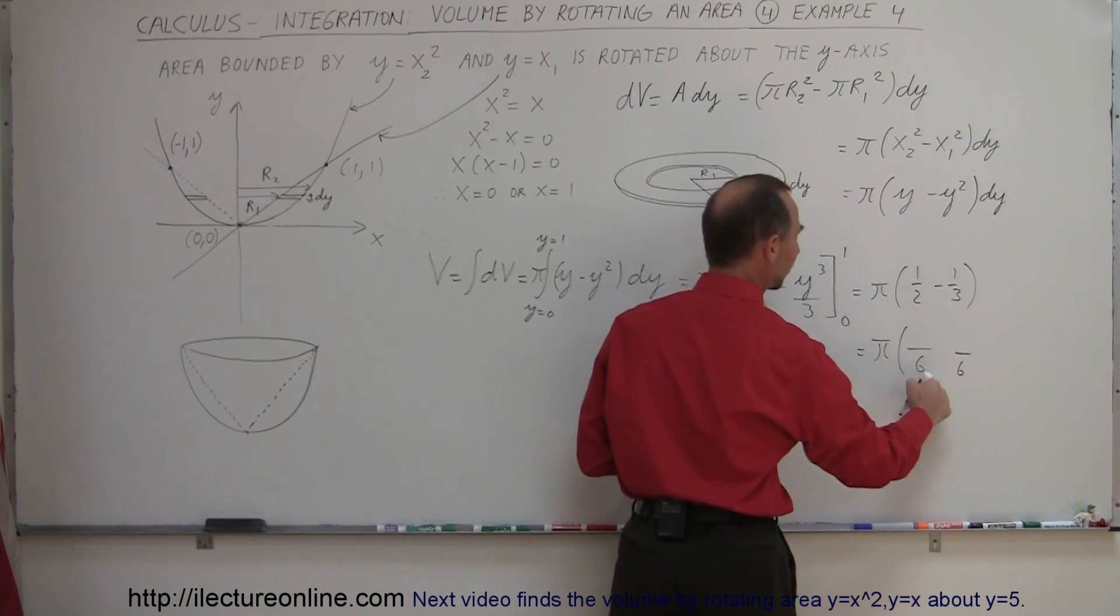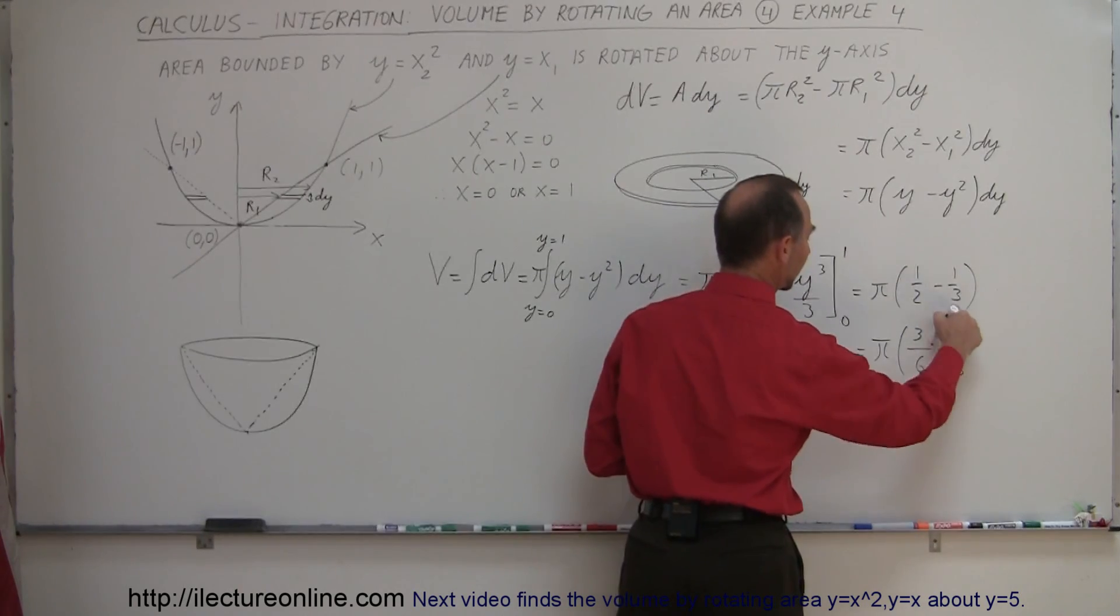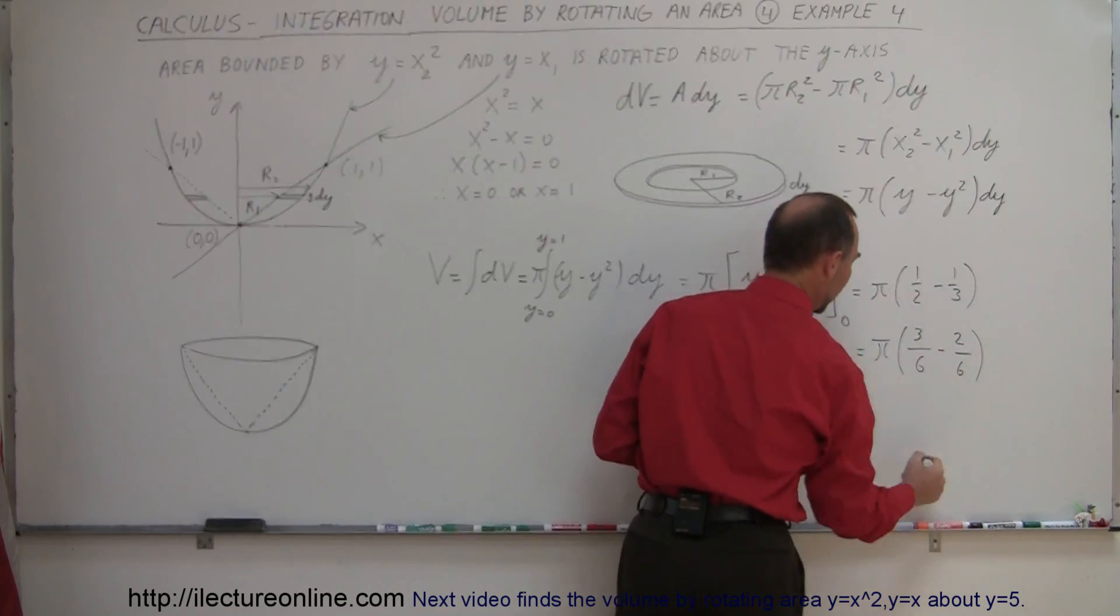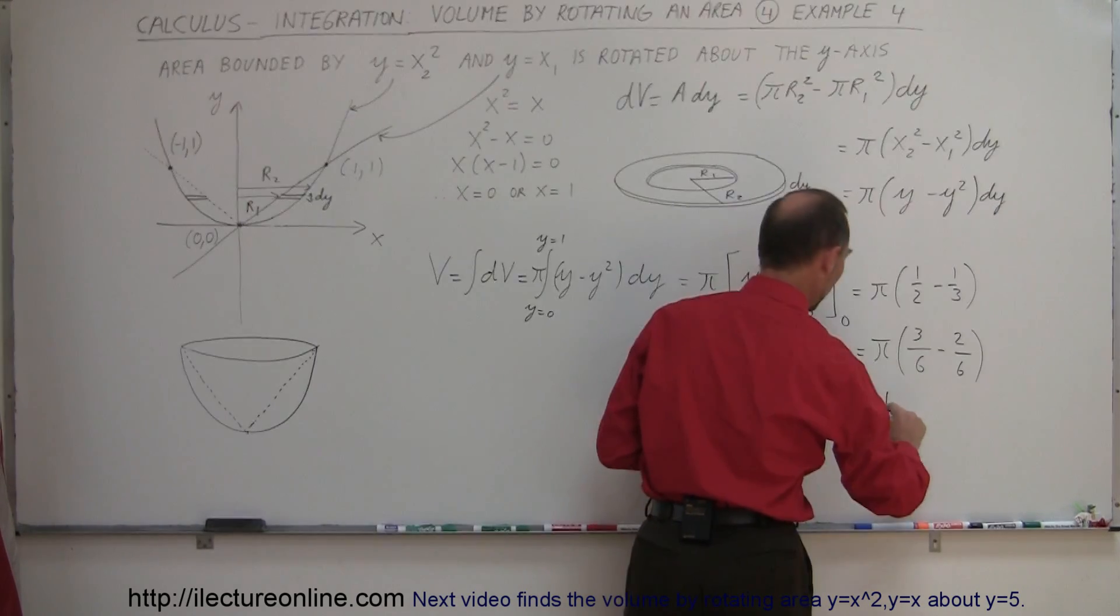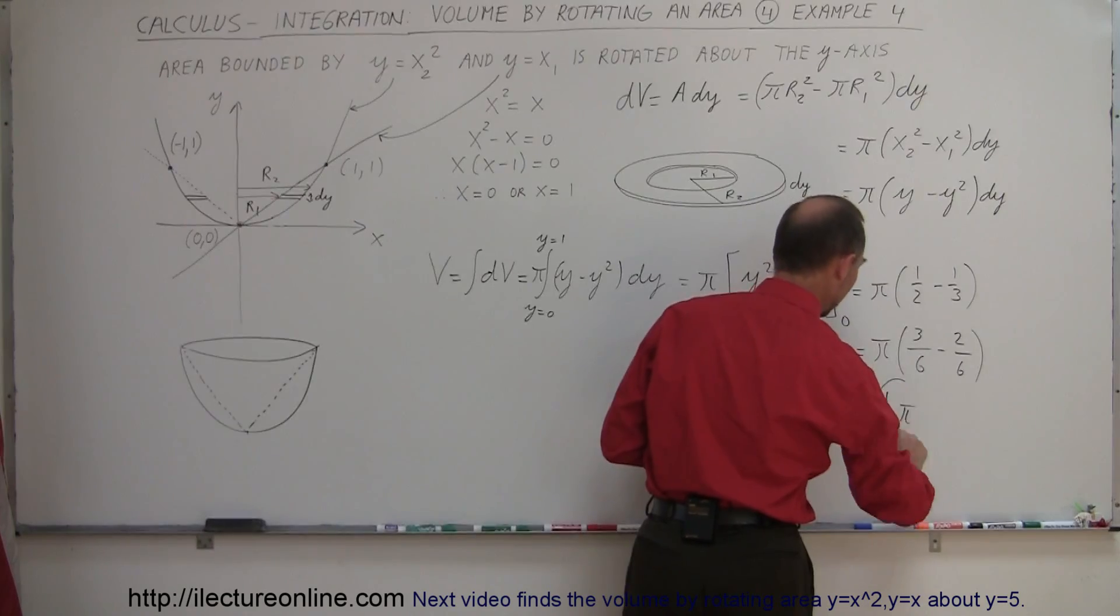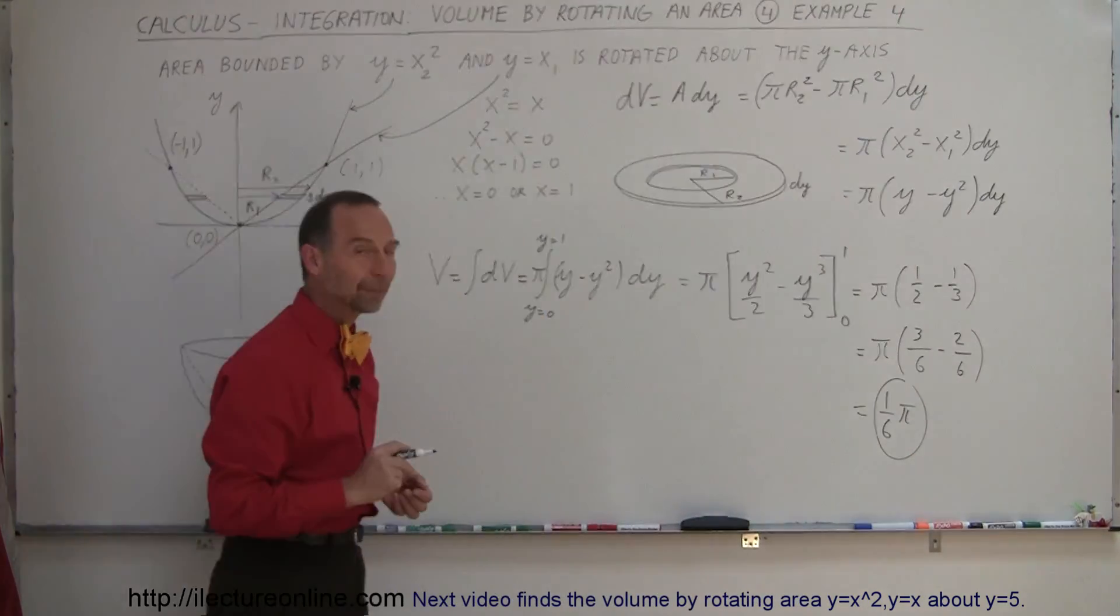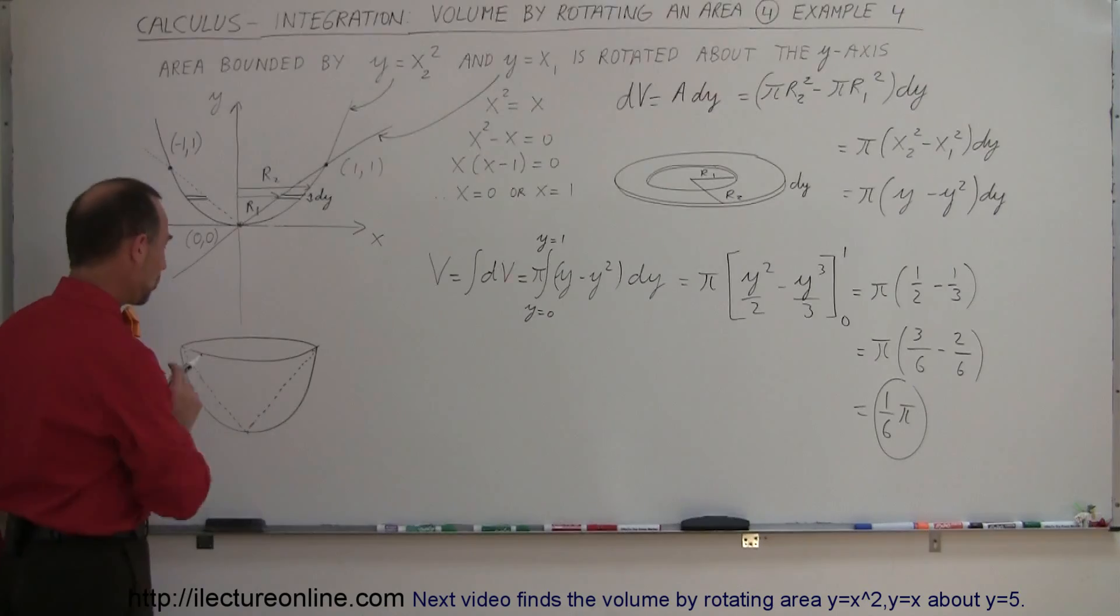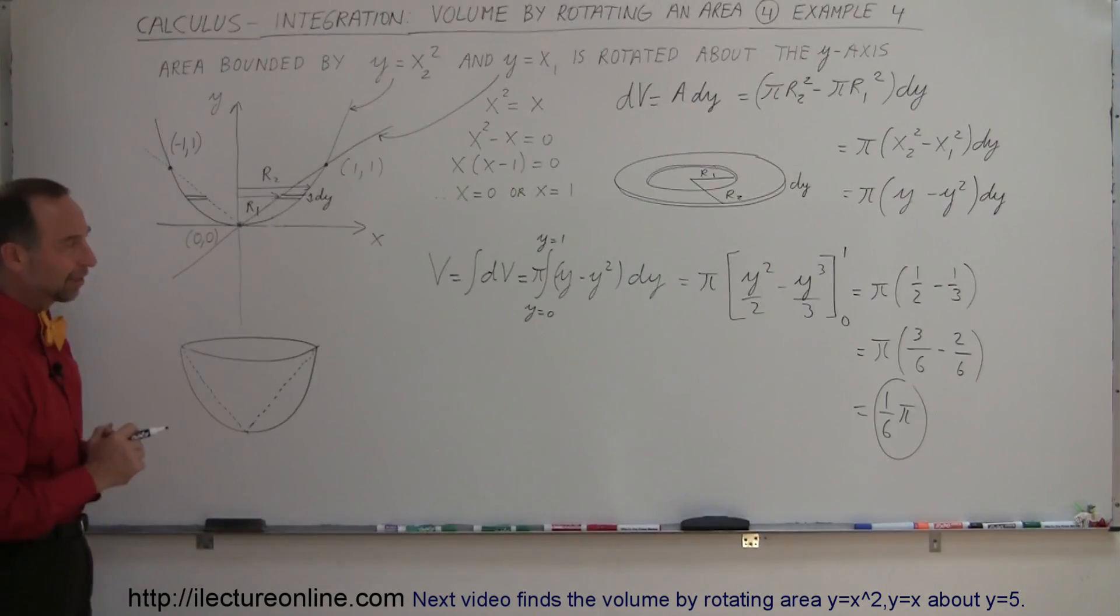And then you combine those by getting the same common denominator, which would be over six. And since two goes into six three times, this becomes three. Three goes into six two times, that becomes two. And so therefore the volume would be one sixth π. And there you go, that would be the volume of this weird looking bowl. That's how we do that.